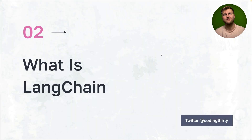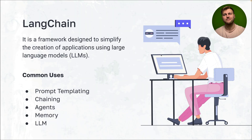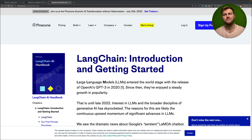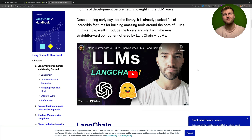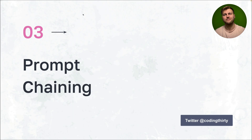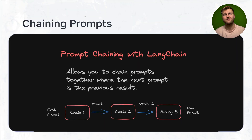What is LangChain? LangChain is a framework designed to simplify the creation of applications using large language models. It allows you to do cool things like creating prompt templates, chaining — which we're looking at today — agents, memory, and gives you the ability to use other LLMs. You can check out a great article on Pinecone's LangChain introduction and getting started guide, which I'll link in the description.